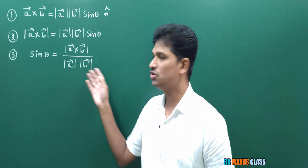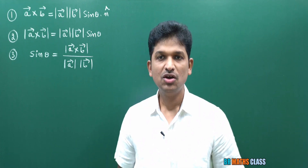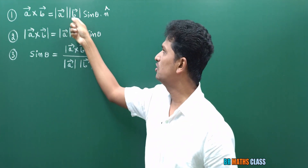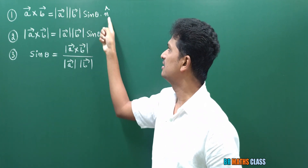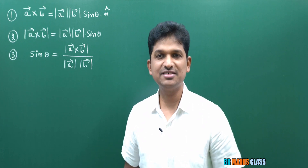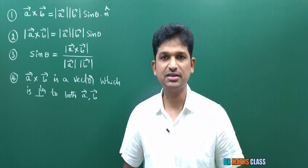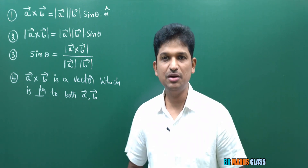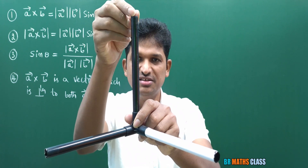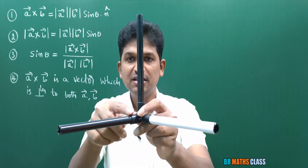In dot product, A bar dot B bar is a scalar. But A bar cross B bar — is it a scalar or a vector? Looking at the definition: magnitude of A bar into magnitude of B bar into sine theta (scalar) times n cap (vector) — scalar into vector gives a vector. So A bar cross B bar is a vector. Since it is a vector, it has direction. A bar cross B bar is a vector perpendicular to both A bar and B bar.